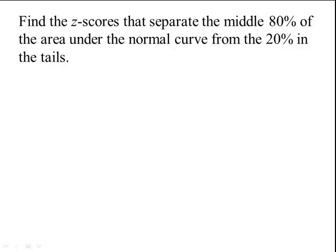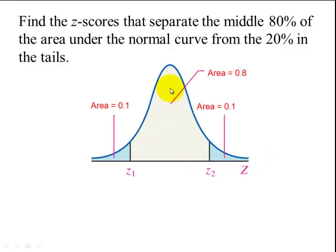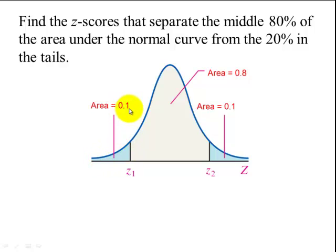Here is another example. Find the z-score that will separate the middle 80% of the area under the standard normal curve from the 20% in the tails. Our first step is to draw a picture. The middle 80% is centered, and the remaining 20% is split equally in the tails — 10% on each side. To find the first z-score, which is clearly negative, we look for the closest value to 0.10 in our table.